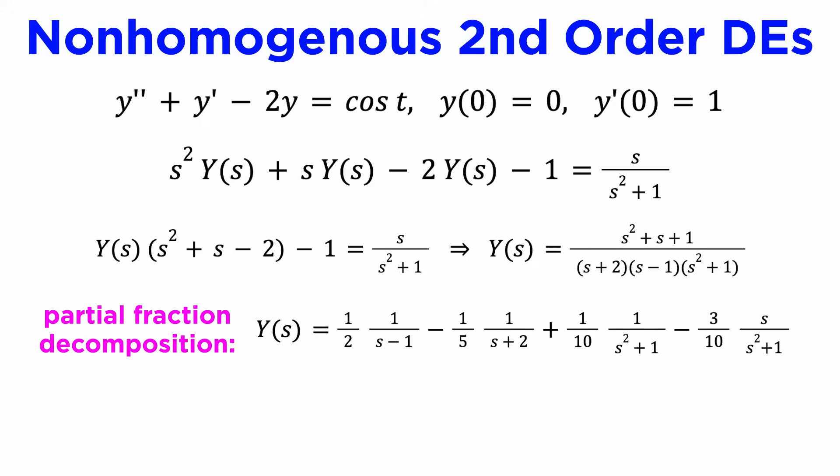Partial fraction decomposition is often the best way to achieve this, which converts a factorized rational function into a sum of irreducible algebraic functions. Skipping the algebra, we can apply partial fractions to our transform capital Y of s to get the following expression. Each of these four terms appears in the table of transforms, and we can just write down the solution term by term.